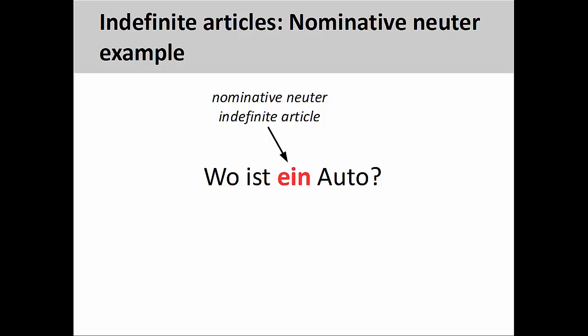The same thing applies with 'Wo ist ein Auto?' — Where is a car? In these cases, you simply need to memorize whether the noun is masculine or neuter.